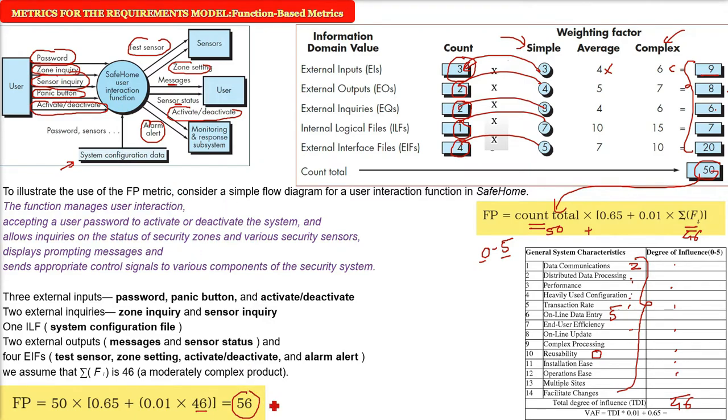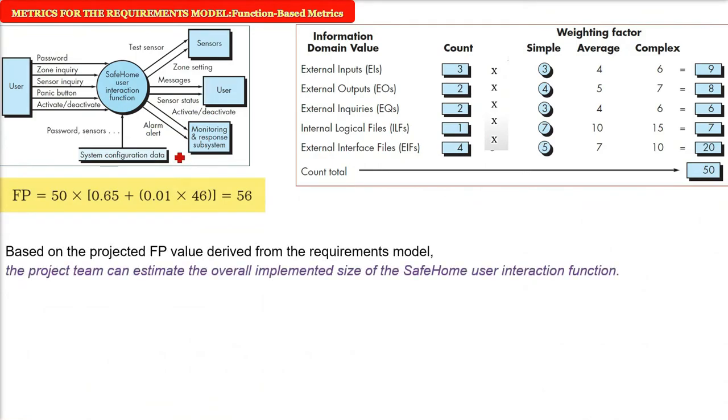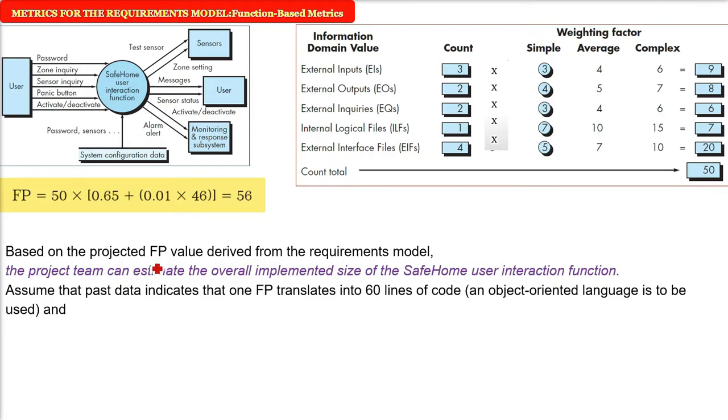56. Now the thing is, why is it important? What do we infer from it? Based on the projected function point value which is derived from the requirement model, the project team can estimate the overall implemented size of the safe home user interaction function. Just assume that past history of this kind of project has given us that one function point translates into 60 lines of code if we use the object-oriented language. So how many function points are here? 56. And one function point gives 60 lines of code. So 60 into 56, this will be the number of lines of code. For example, 12 function points are produced for each person month of effort. So just divide 56 by 12. This is you will get the answer for the effort. So line of code you got, the effort you got.